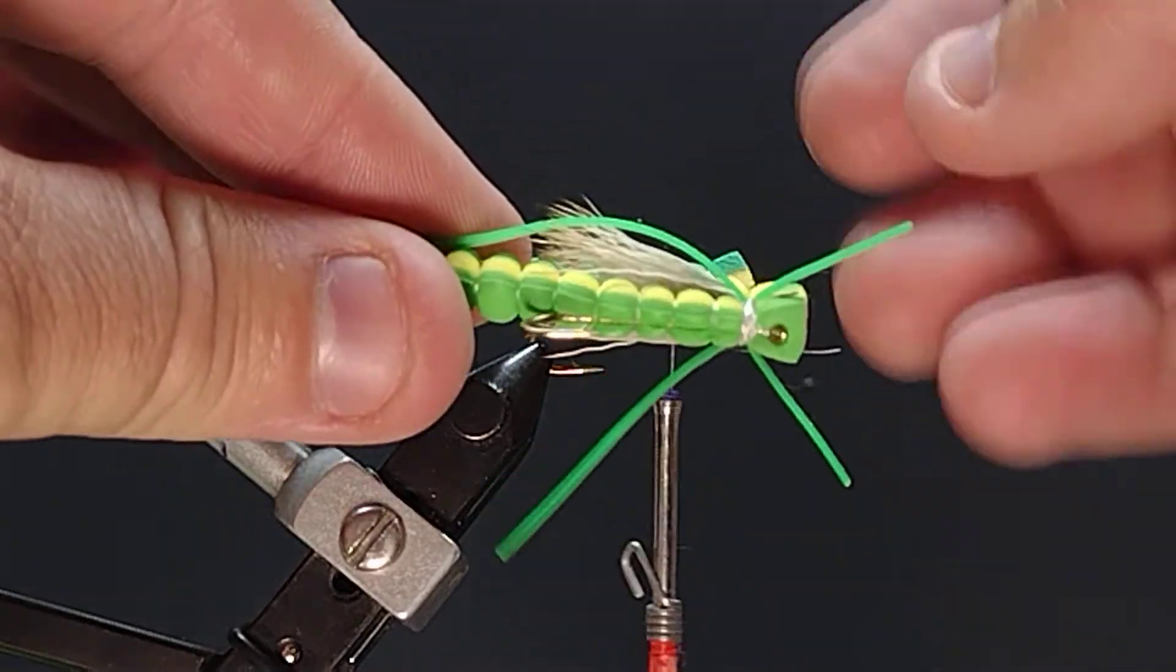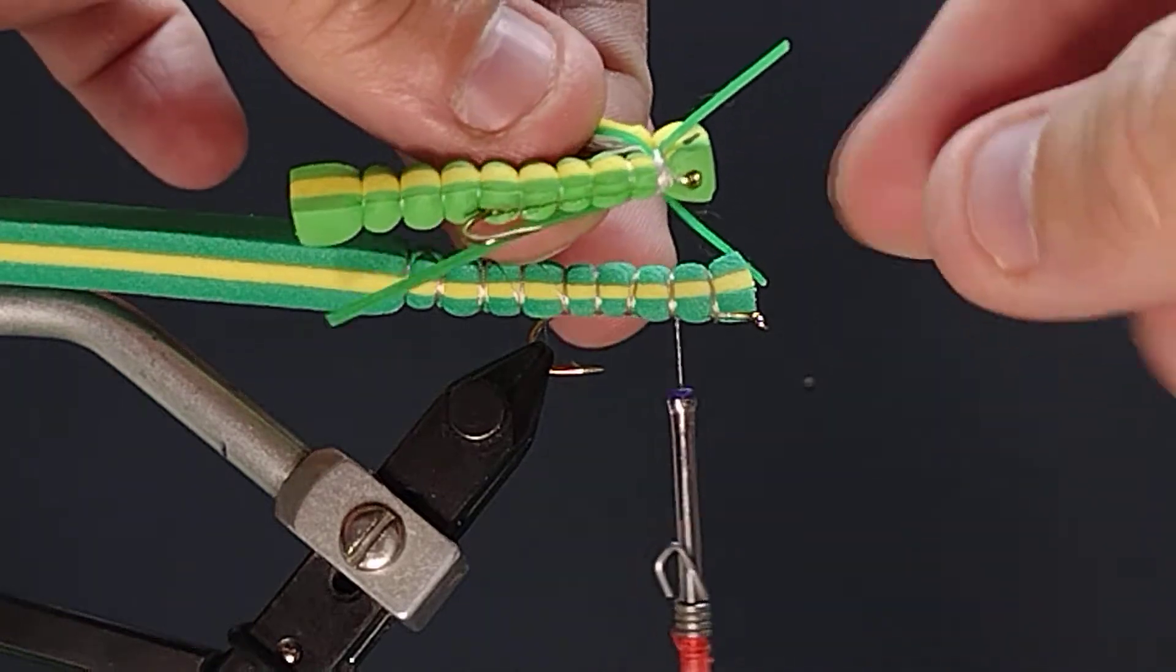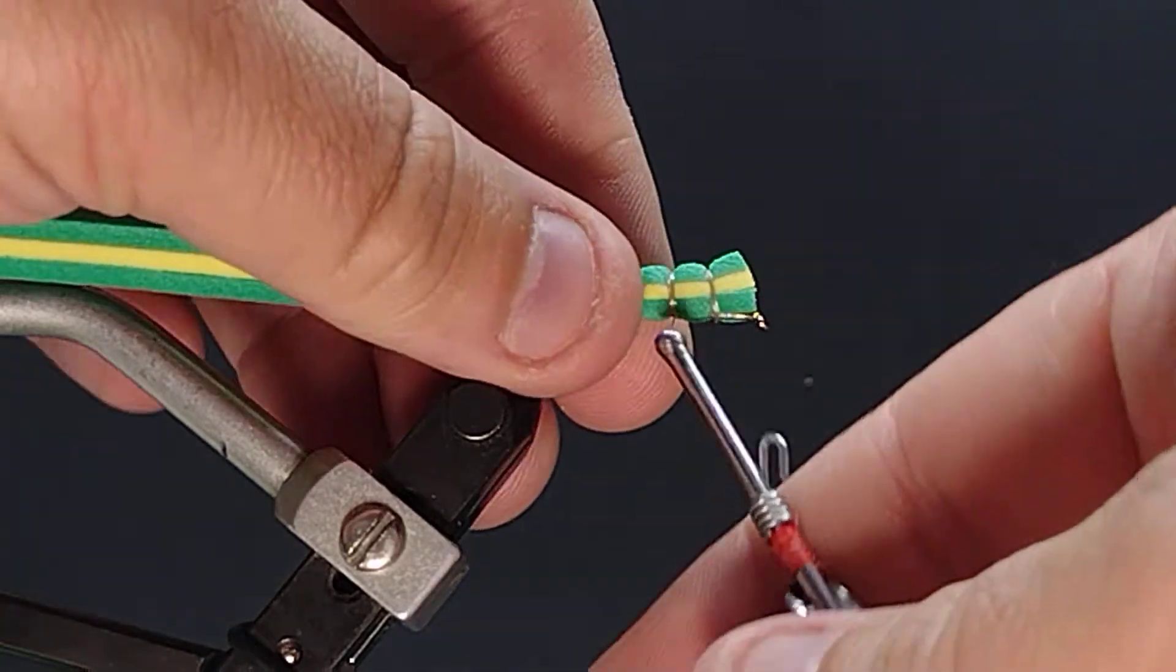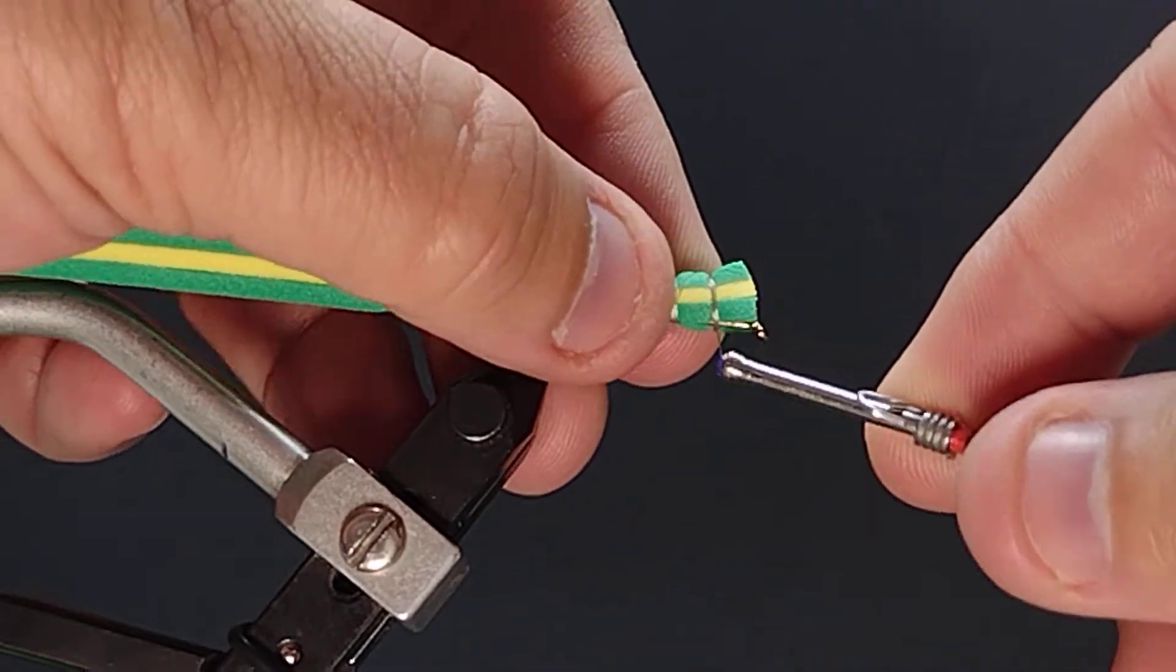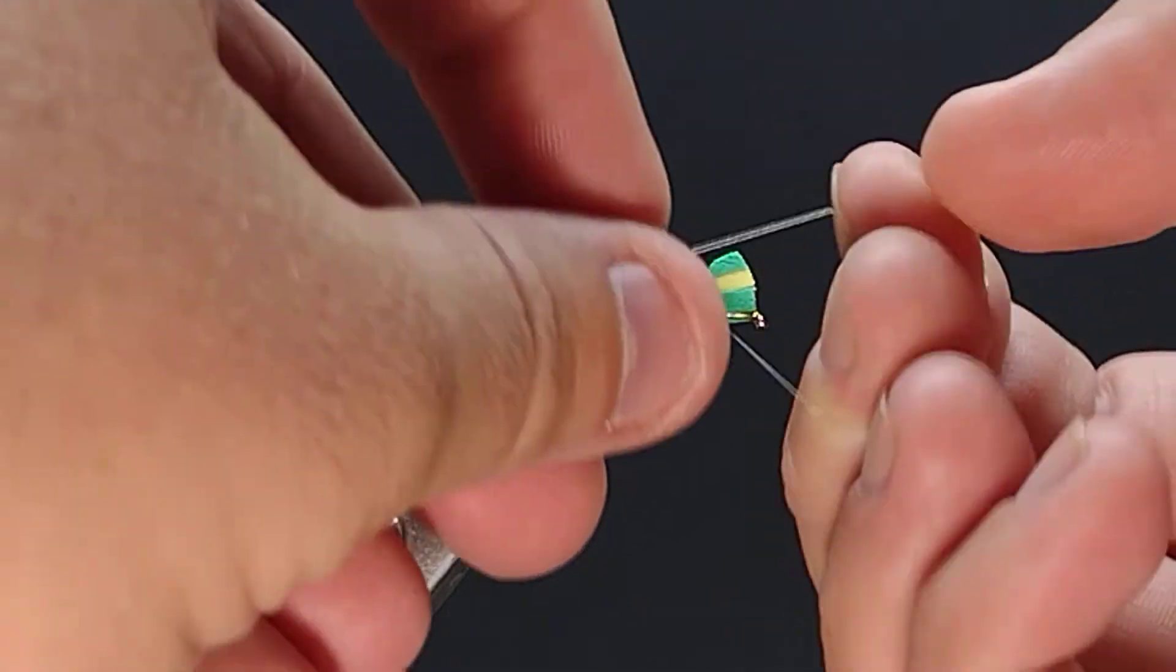And if you look back at the original here you can see that once you got those body segments in, all your tie-in is pretty much done right there at that first body segment. So bring that thread back there. One more half hitch here for a second.